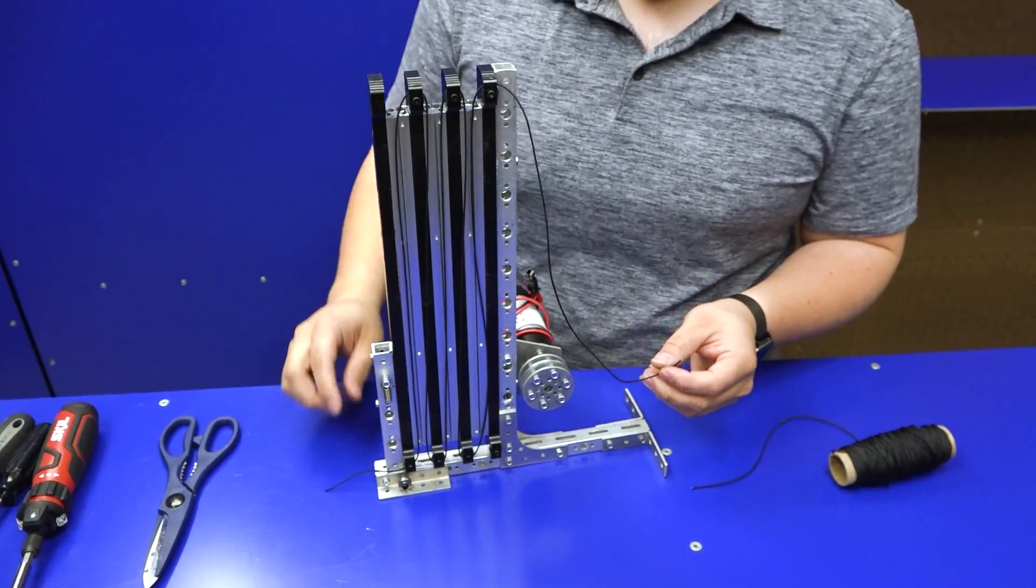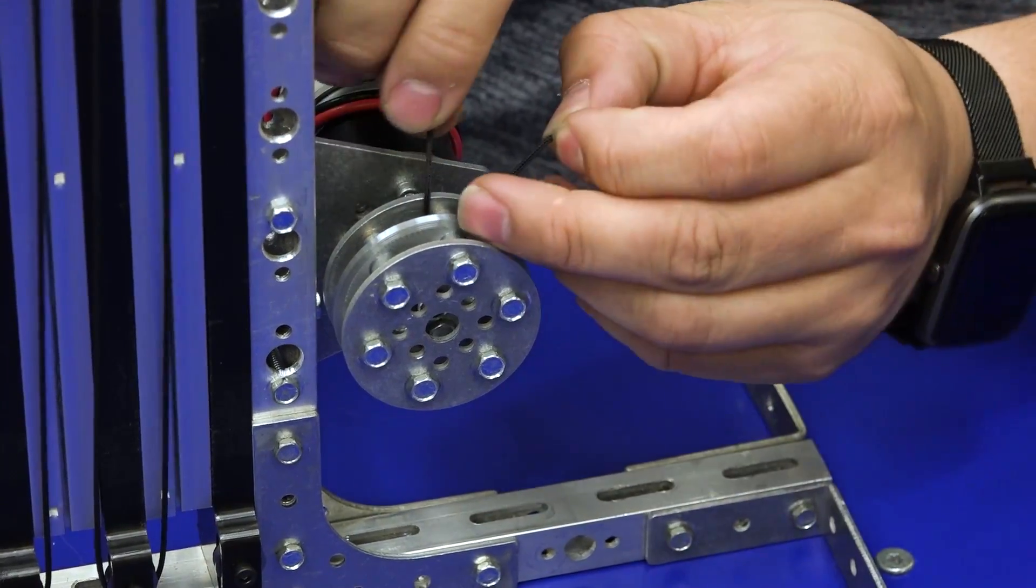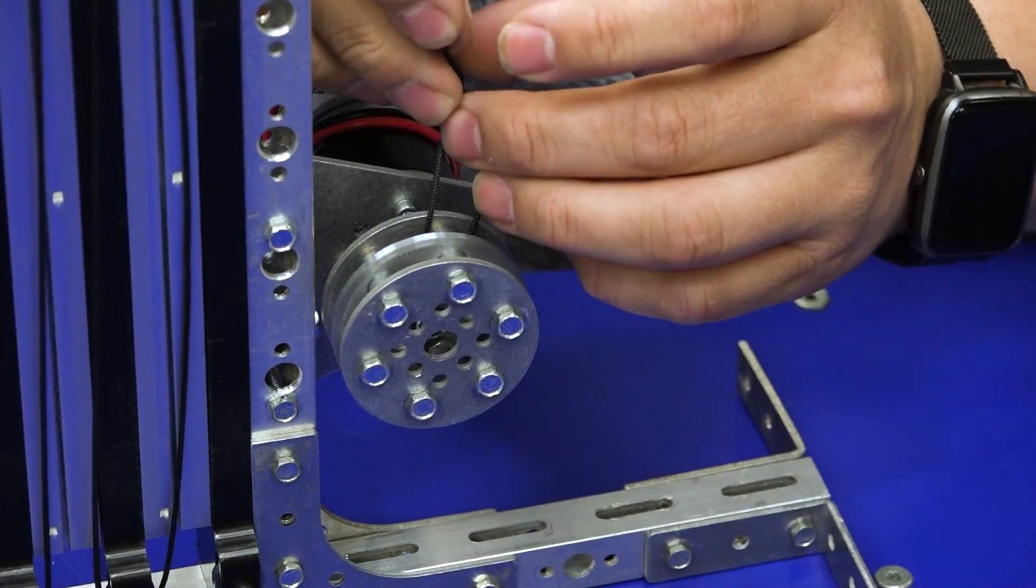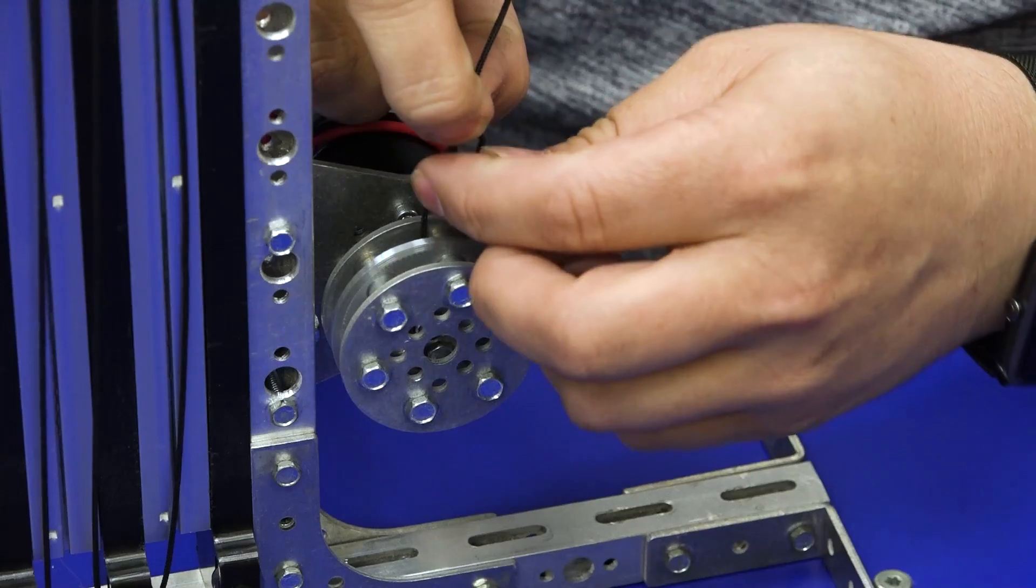So we usually just use a little lighter. So we're going to wrap it around the inside portion of our spool. We're going to do a pretty simple knot. We're going to tie it once.